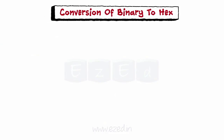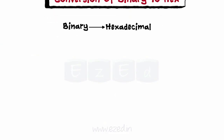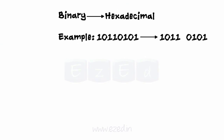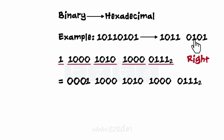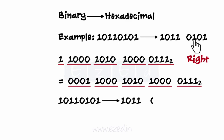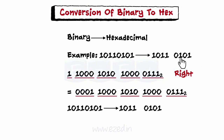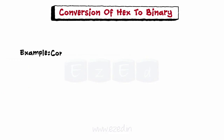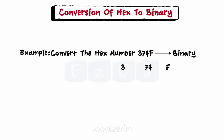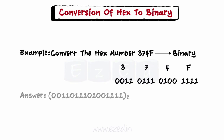For conversion of binary to hex: divide the binary number into groups of four digits, starting with the rightmost digit. If the number of digits isn't a multiple of four, prefix the number with zeros so that each group contains four digits. For each four-digit group, convert the four-bit binary number into an equivalent hexadecimal digit. For conversion of hex to binary: convert each hexadecimal digit into a group of four binary digits, and in this way we get our answer.